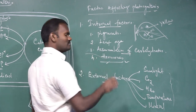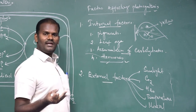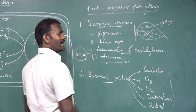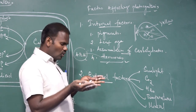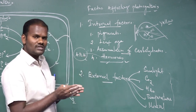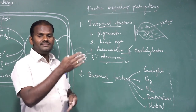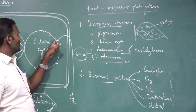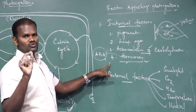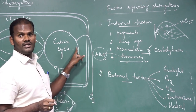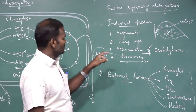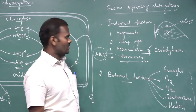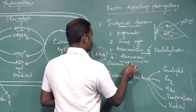Regarding hormones: there are five groups — auxin, gibberellin, cytokinin, ethylene, and ABA (abscisic acid). ABA causes closure of stomata. When stomata close, gaseous exchange does not take place, and carbon dioxide cannot enter the leaf through the stomata. This arrests photosynthesis. So ABA, abscisic acid, plays an important role in affecting the rate of photosynthesis by causing stomatal closure.